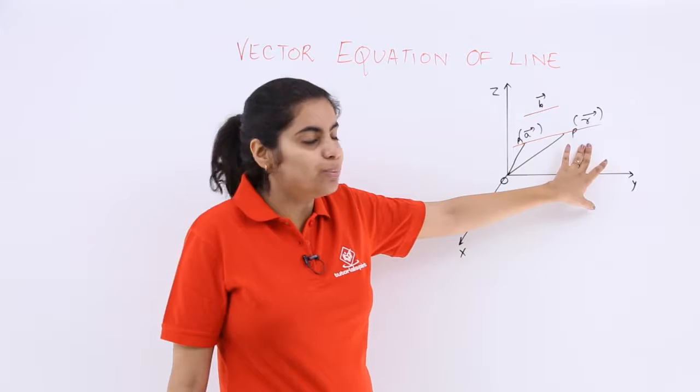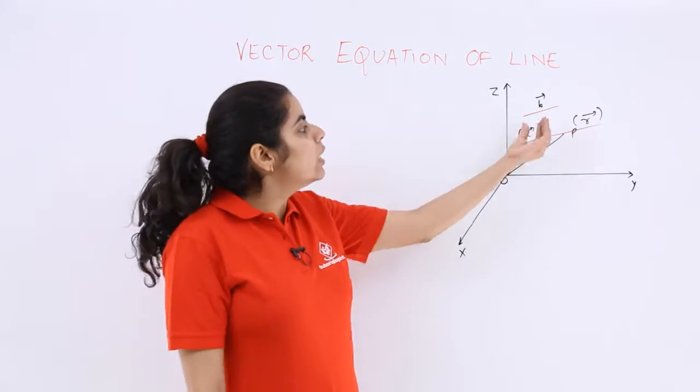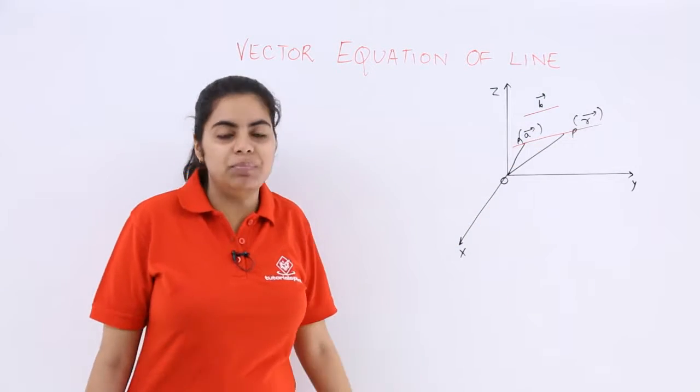Then you also have a point p where the position vector is given to you as r vector. Also given to you is b vector and b vector is parallel to this ap vector.